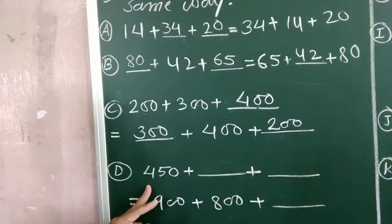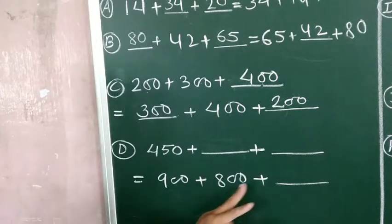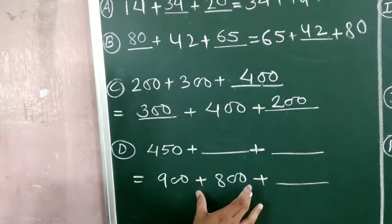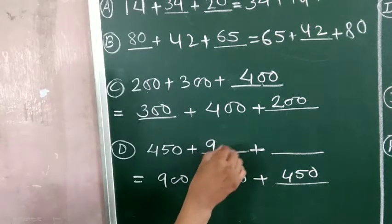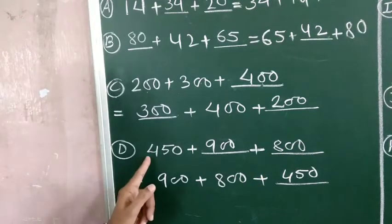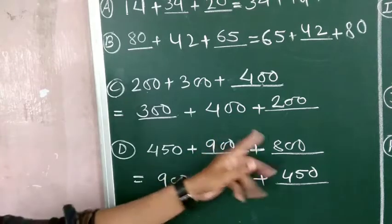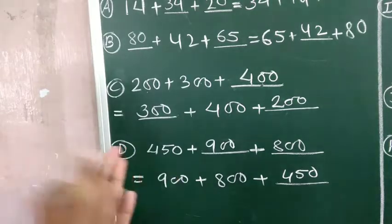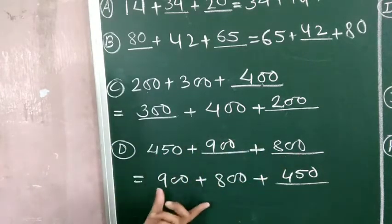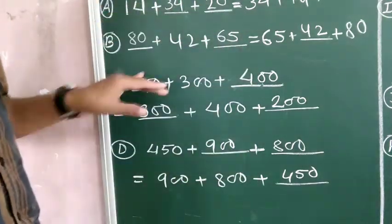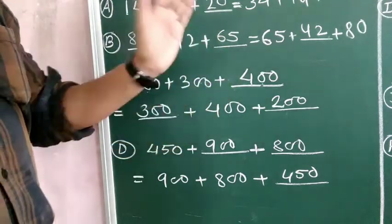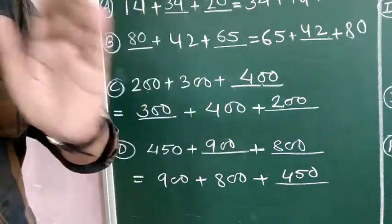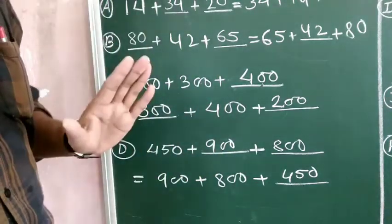Next: 450 plus dash plus dash equals 900 plus 800 plus dash. Only one number is given here, so 450 is not on the right side — we put 450 there. Then the two blank spaces get 900 and 800. So: 450 plus 900 plus 800 equals 900 plus 800 plus 450. Same numbers, same value. So in all examples a, b, c, d — if you change the order while adding numbers, the addition remains the same.